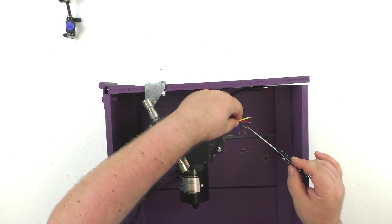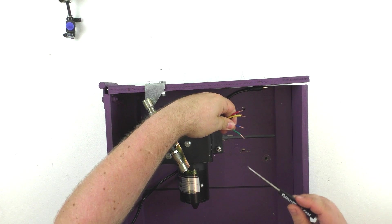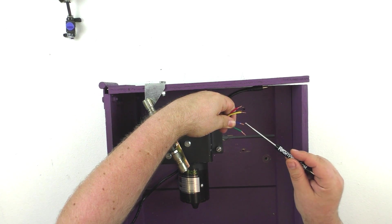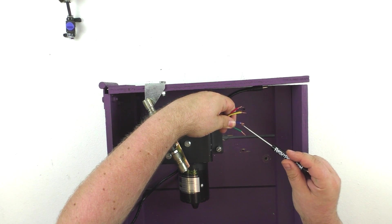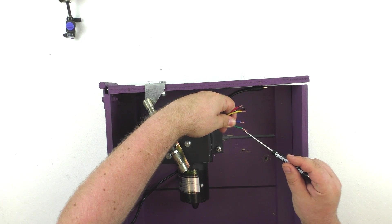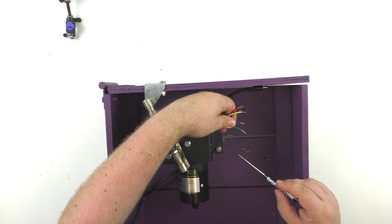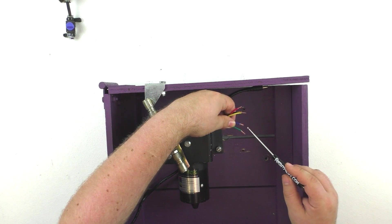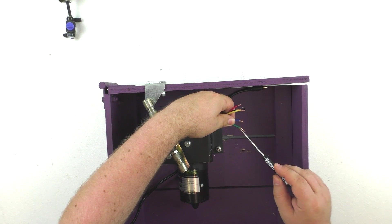So our red wire is our positive. We have two negative wires, a blue and a green. Blue is for the fast speed of the motor, and green is for the slow speed. So you can actually select a fast or slow speed without using a controller. You just either use the blue for fast or the green for slow.